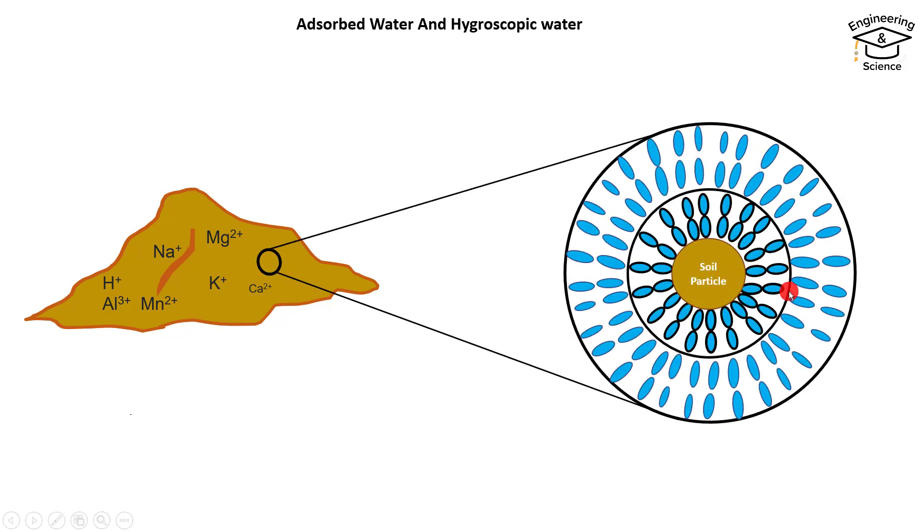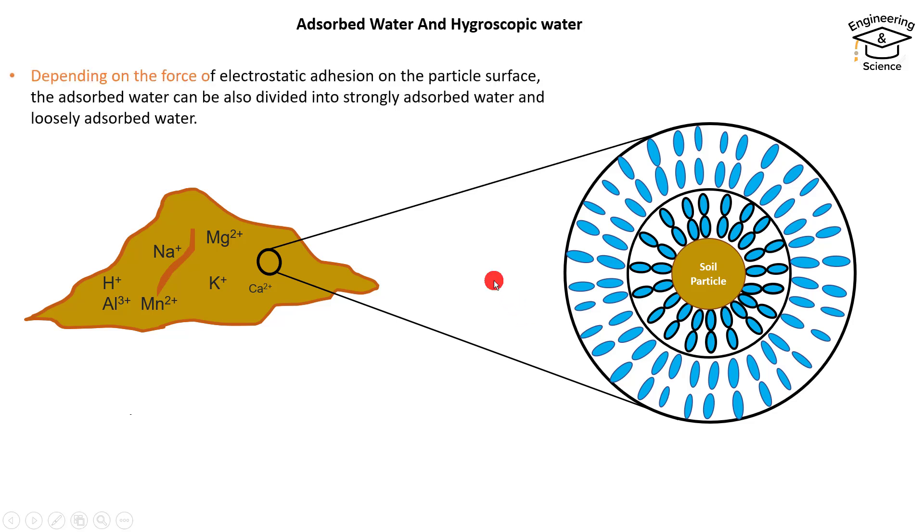The adsorbed water arranges around the soil particle in two layers. Let's define both of these two layers and how they happen. Depending on the force of electrostatic adhesion on the particle surface, the adsorbed water can be divided into strongly adsorbed water and loosely adsorbed water.